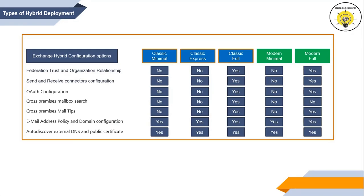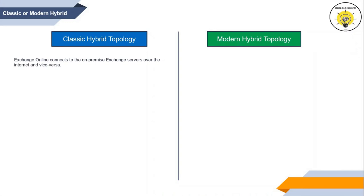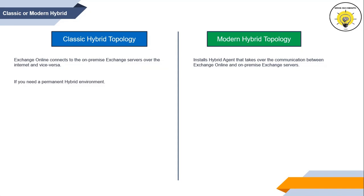The question is: what type of hybrid deployment should you choose — classic or modern? In classic hybrid deployment, Exchange Online and on-premise Exchange connect to each other directly during mailbox migration or any communication. In modern hybrid deployment, a hybrid agent is installed that handles the communication between on-premise and Exchange Online. The hybrid agent eliminates the requirement for inbound HTTPS connections to the on-premise Exchange organization.